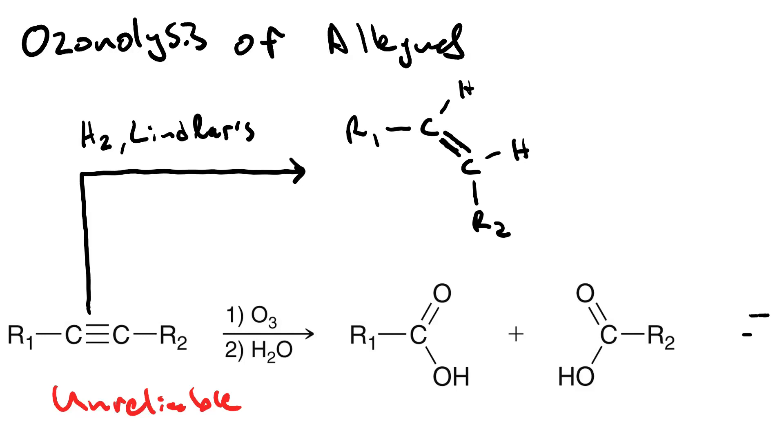So that reduction step with the poison catalyst, Lindlar's catalyst, gives us the cis alkene. Which, if we want to do ozonolysis to get carboxylic acids, we can then react it with ozone followed by hydrogen peroxide. And this is a better pathway than doing ozonolysis of the alkyne.